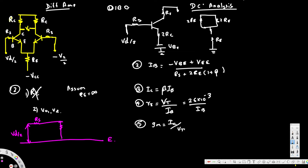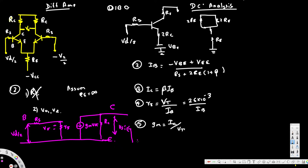At the bottom we have the emitter. The Rs resistance is here. Then we have resistance r5, and the voltage across it is v5. Here we have a current of magnitude gm*v5, and in parallel we have Rc. This line is the collector, this is the base, and the bottom line is the emitter.